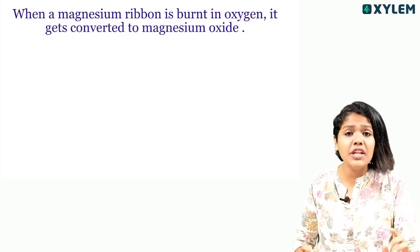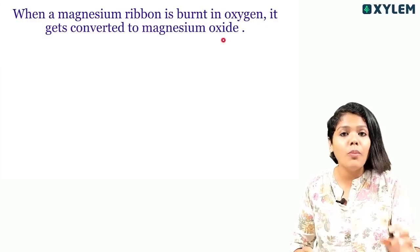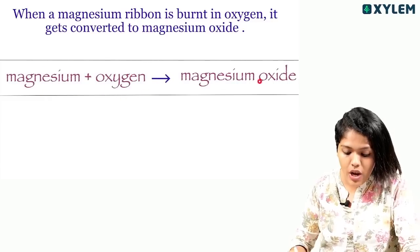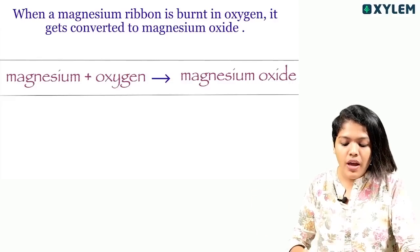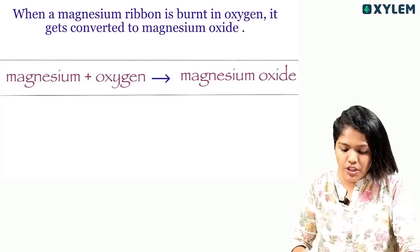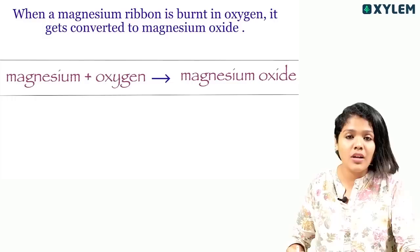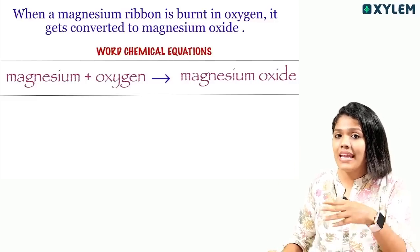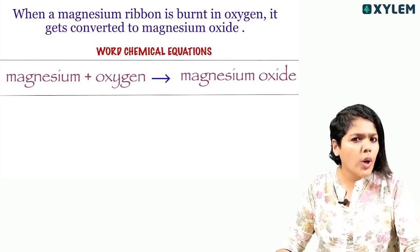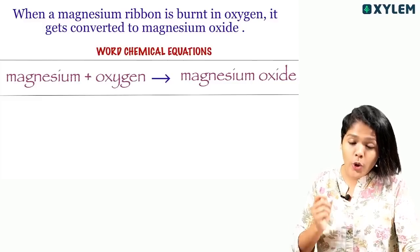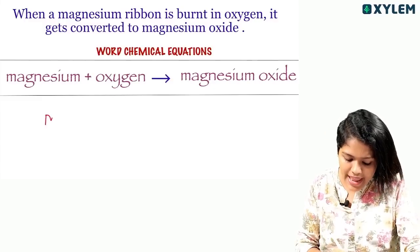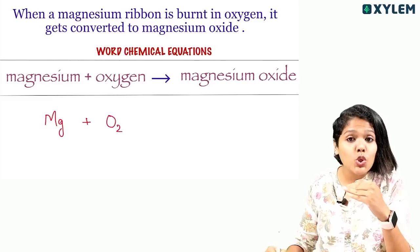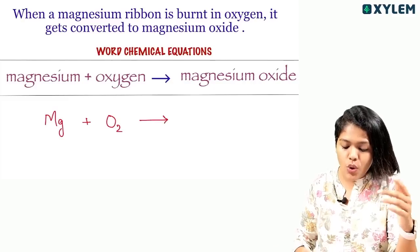Let's take a look at the next example. When a magnesium ribbon is burnt in oxygen, it gets converted to magnesium oxide. Where is the word chemical equation? Magnesium burns in the presence of oxygen and gets converted to magnesium oxide — that is the word chemical equation. Now for the skeletal formula, we use symbols. What is magnesium? It is monoatomic, so we write Mg. Oxygen is a diatomic molecule, so we write O2. Magnesium oxide — it is the compound.